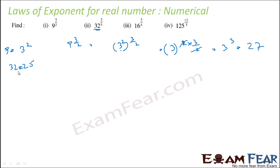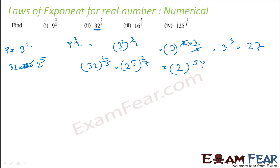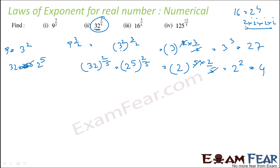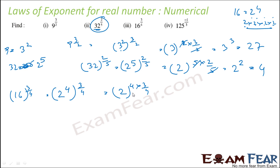Similarly, 32 to the power 2 by 5: since 32 equals 2 to the power 5, we write 2 to the power 5, raised to the power 2 by 5. This becomes 2 to the power 5 times 2 by 5 — the 5's cancel, leaving 2 to the power 2, which is 4. Next: 16 to the power 3 by 4. Since 16 equals 2 to the power 4, we write 2 to the power 4 raised to the power 3 by 4. The 4's cancel, giving 2 to the power 3, which is 8.